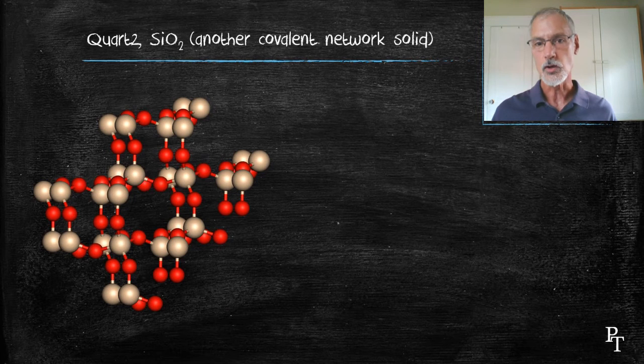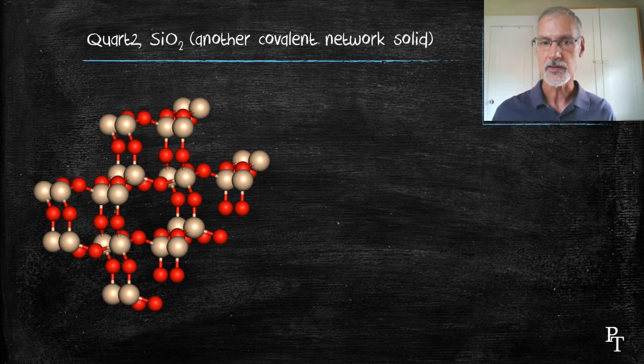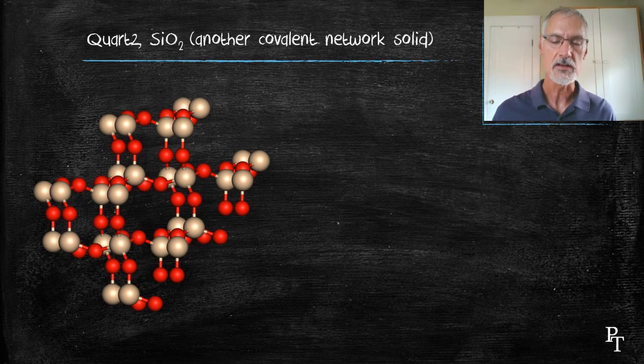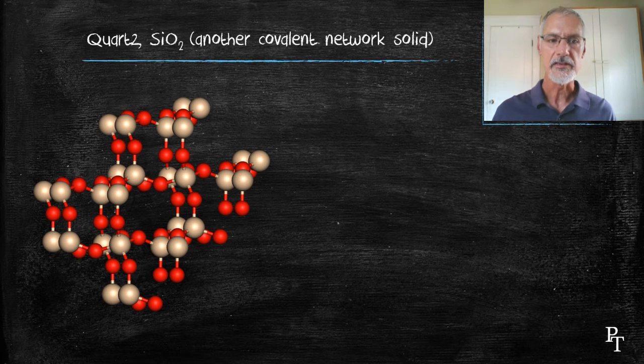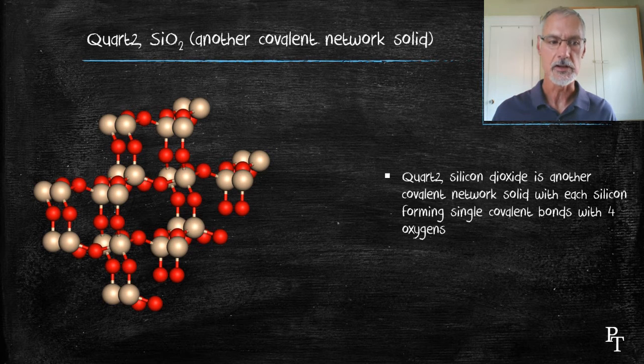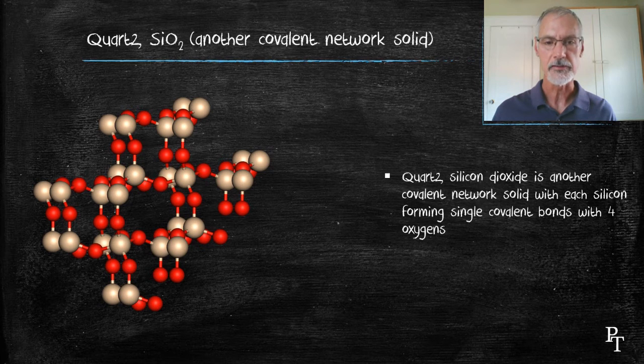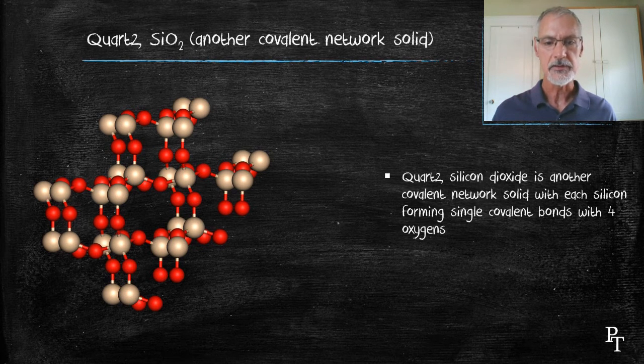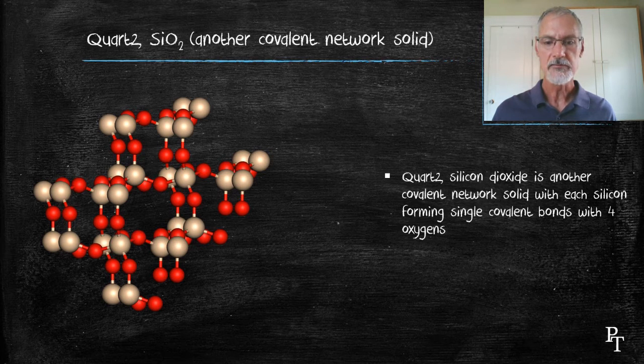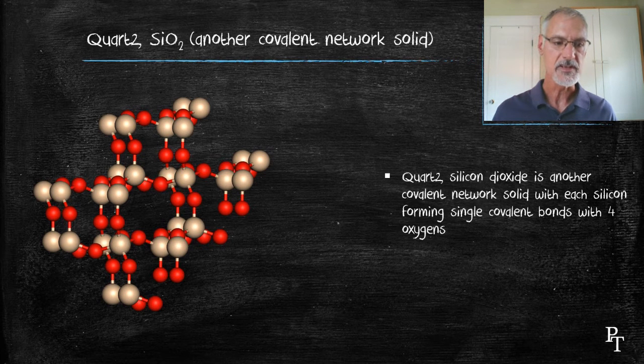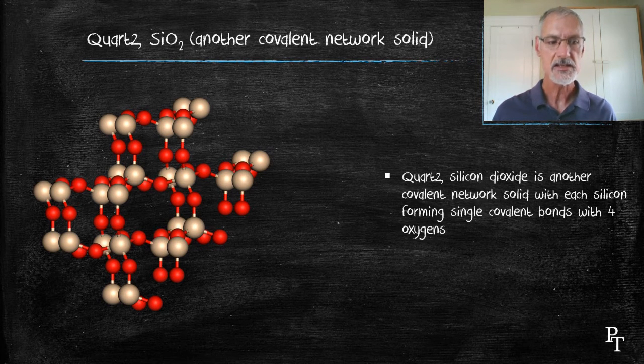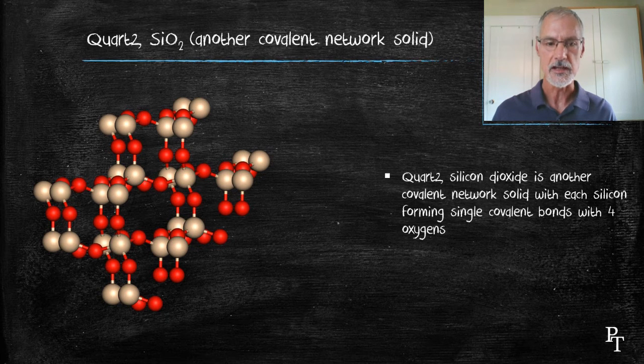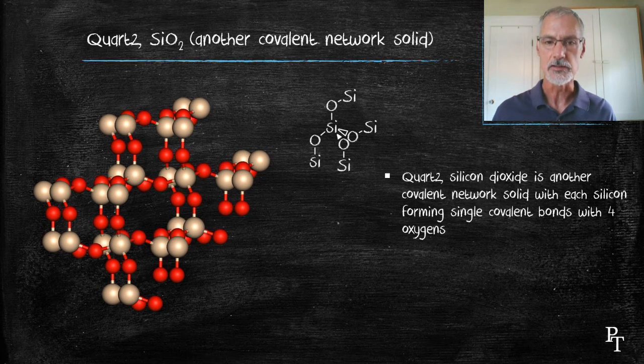I'm going to mention at this point quartz. Now, quartz is not an allotrope of carbon, but it does share something in common with diamond, in that it's another example of a giant covalent network solid. Here you can see a picture of the starting of its arrangement over here on the left. In this particular molecule, every silicon shown here as sort of a tan-colored atom is connected to four oxygen atoms in a tetrahedral-like arrangement.